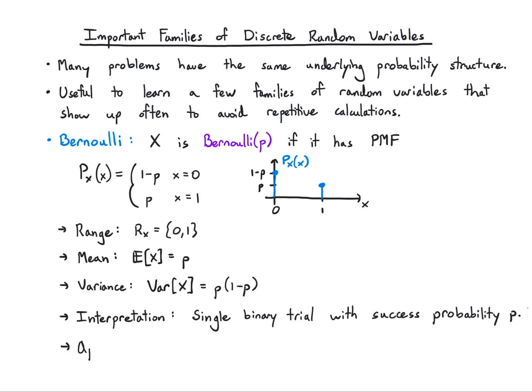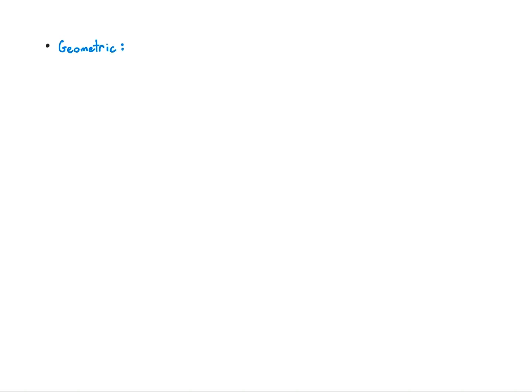Maybe win happens with probability p and lose with probability 1 - p. An engineering application where this might show up is bit flips in a communication channel — you're sending bits over a wire and some get corrupted, which you can model with a Bernoulli(p) random variable.